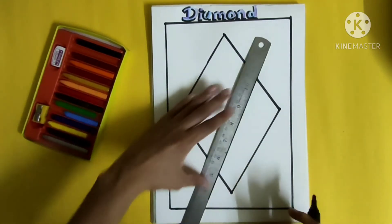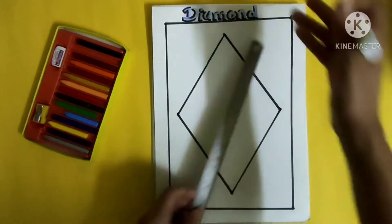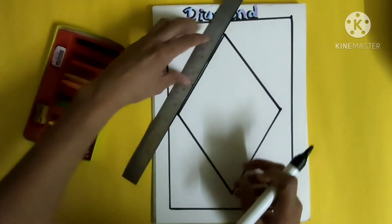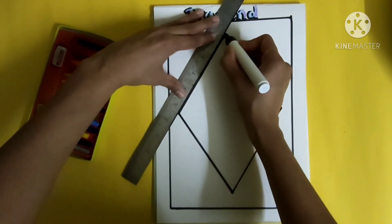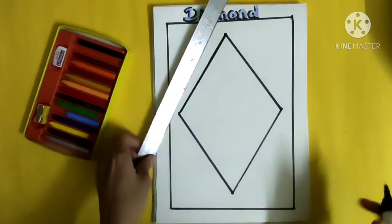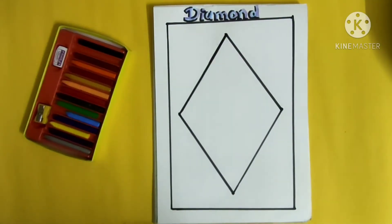So how many sides does a diamond have? Four sides, and all four sides are slanting.